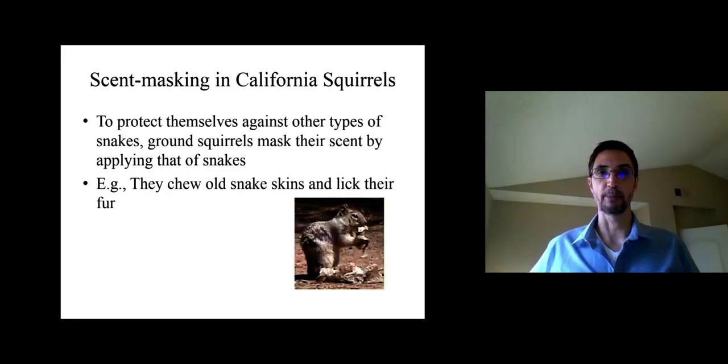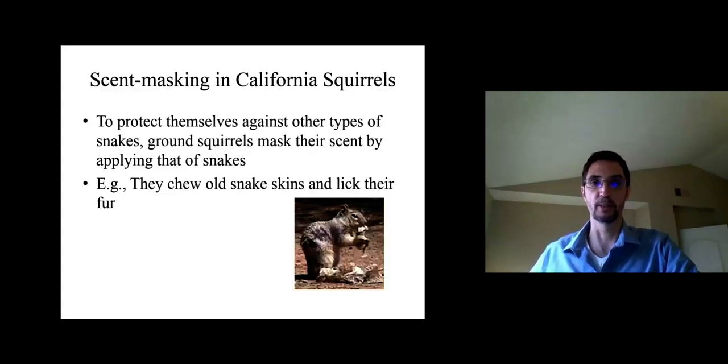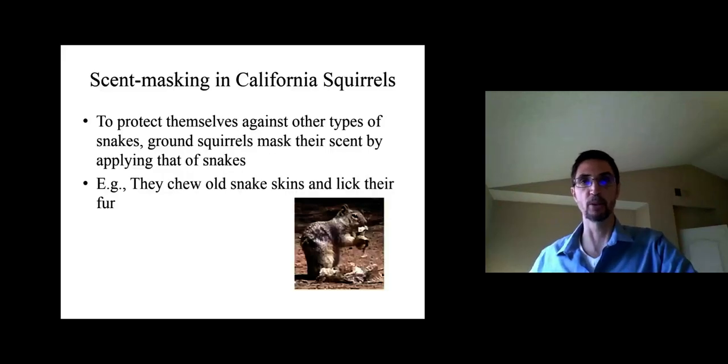So how do they deal with other types of snakes? Well one of the things that California ground squirrels do is that they mask their scent. They hide their own scent by applying the scent of other snakes. So what they do is when they find the snake skins that have been shed by snakes, is they chew them and then they lick their fur. And this covers their fur with the scent of the snakes. Other times what they do is they'll walk over the ground where other snakes have been and they might roll around in it and absorb some of the scent that way.